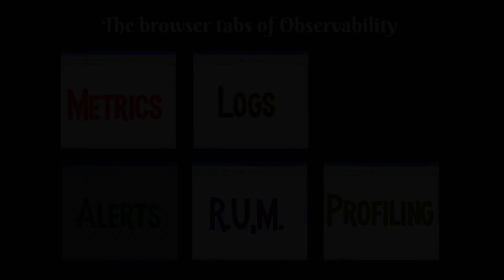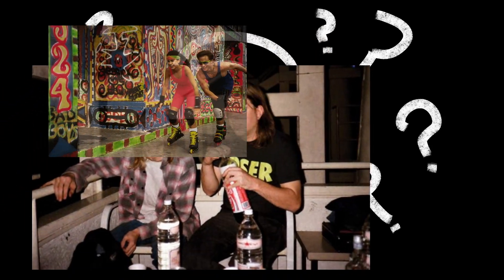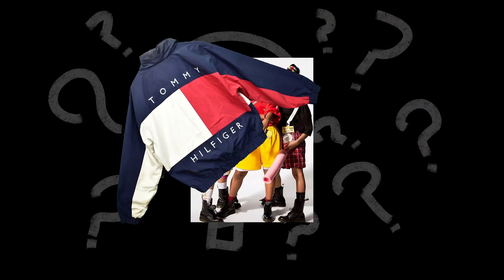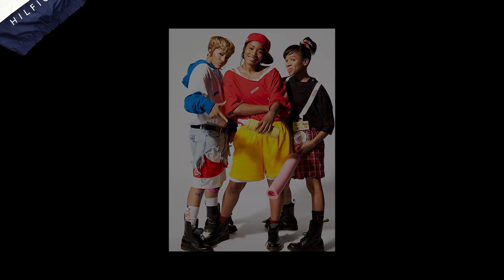So that's observability in a nutshell. What's wrong with this picture? We've been doing observability like this since the 90s — what's broken about it? To answer that question, let's look at what we're actually observing.